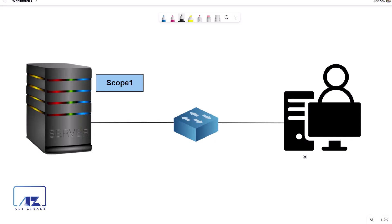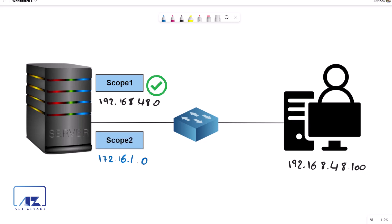When you create a scope on the DHCP server, the scope can only lease IP addresses to clients that are on the network with the same IP range as the scope. If your clients are on a network with the IP range of 192.168.48.0, your DHCP scope should be using 192.168.48.0 as well. If you create a scope with a different IP range, the DHCP server would not be able to serve the clients on the 192.168.48.0 network.